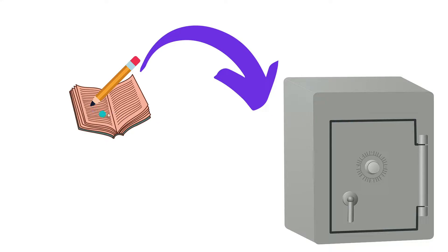Always write it down on a piece of paper and put it somewhere safe. Now, I want to make it very clear that the backup feature is an opt-in feature. This means that you must allow the Authy application to enable backups to occur.